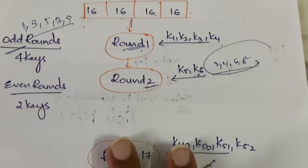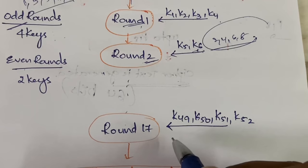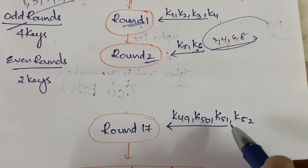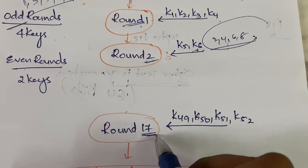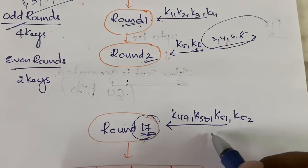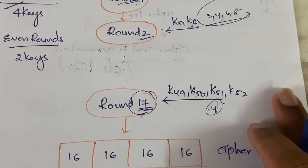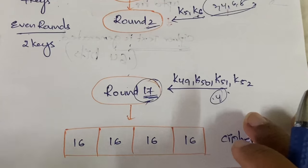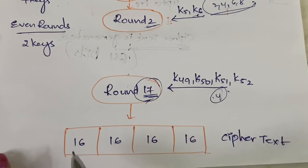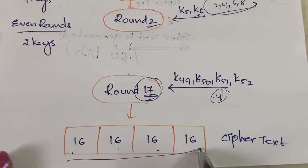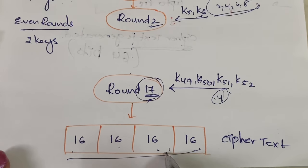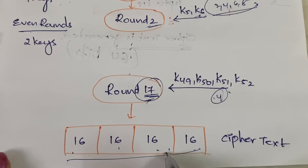This process continues up to round 17. In round 17, since it is an odd round, you will again have four keys. After round 17 you will get the final output — 16, 16, 16, 16 bits — which combined together gives you the 64-bit ciphertext.